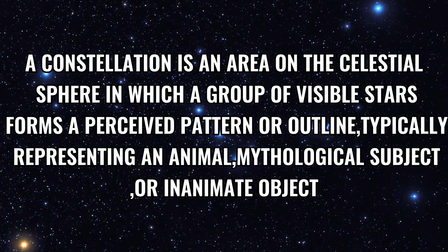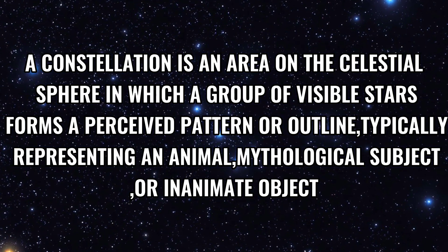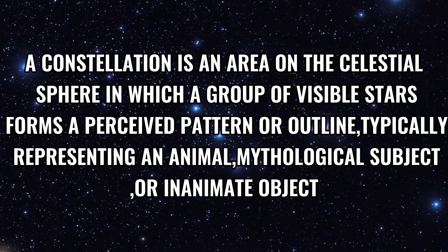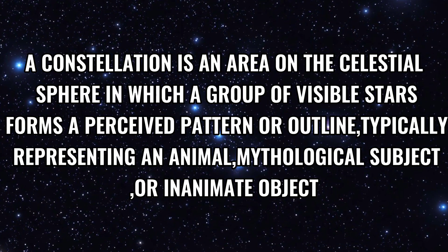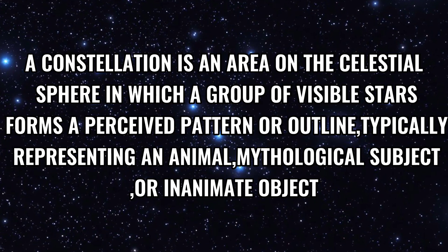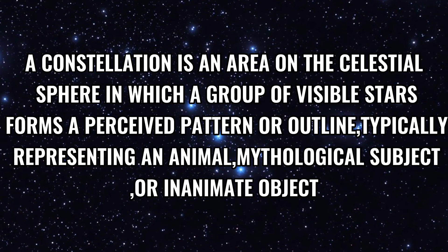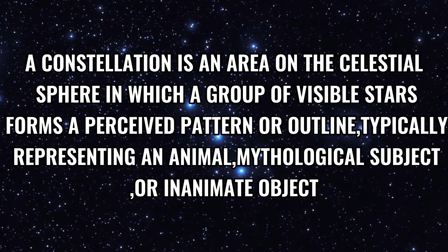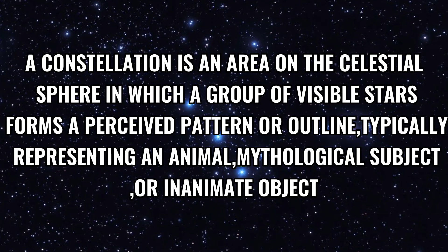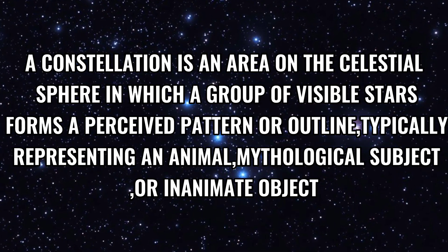A constellation is an area on the celestial sphere in which a group of visible stars forms a perceived pattern or outline, typically representing an animal, mythological subject, or inanimate object.